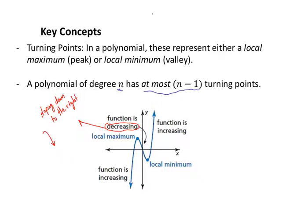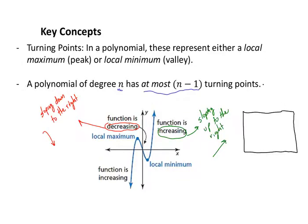When a function is increasing, that means some region of the graph is sloping up to the right. A good analogy is a businessman presenting sales to a board of directors. The areas where the graph goes down to the right are decreasing sales — bad areas. The areas where the graph slopes up to the right are increasing sales — good areas. If we think of it that way, it may help.